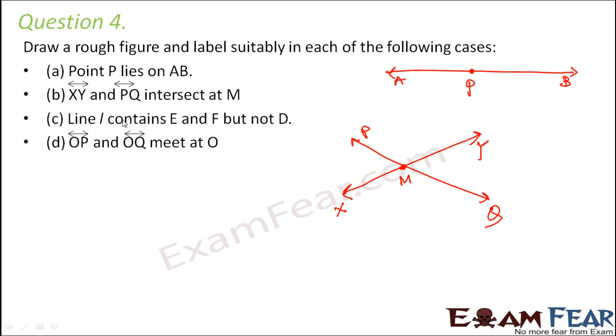Line L contains E and F but not D. So let us first draw a line L. So let us call this as line L. This line contains point E and F. So E and F are present on this line L but not D. That means D is present somewhere outside. Whether here or here or anywhere but not on the line.